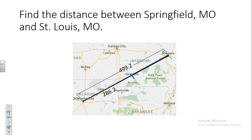We do this all the time without thinking about it. We planned a trip from Oklahoma City to St. Louis, Missouri — a relatively straight route of 499.2 miles. We filled up with gas in Oklahoma City and the trip odometer reads 286.2 miles when we stop in Springfield. We want to know how much further to St. Louis: 499.2 minus 286.2 equals 213 miles. Real-life application of geometry.